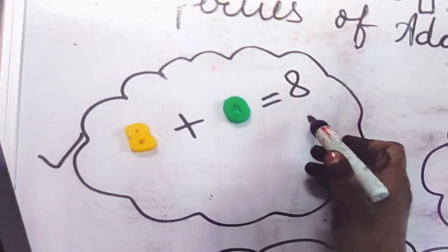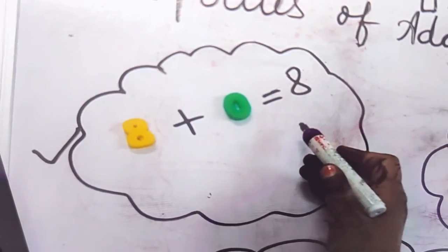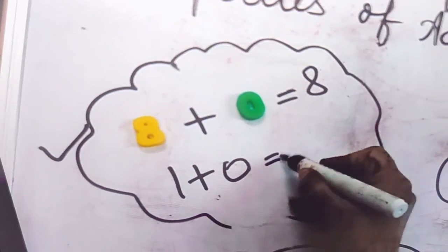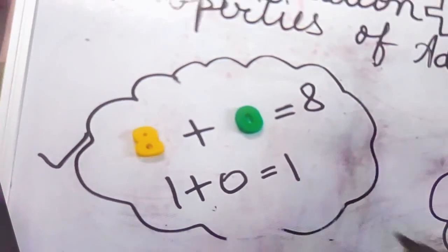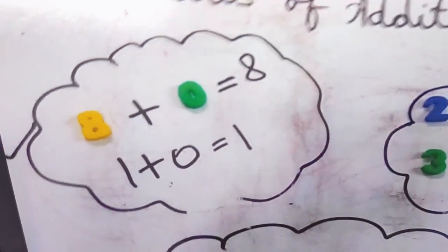It will remain the same. It means 8 plus 0 equals 8. Similarly, if we take 1 plus 0, it will be 1. So, if 0 is added to any number, then it will not change.